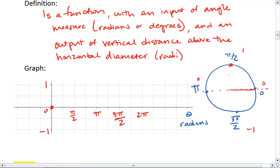When we're up at the top, we are a full radius length above. So at pi over 2, we're one full radius length up.